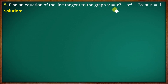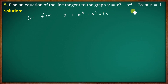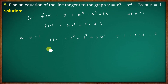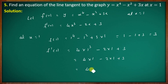Find the equation of the tangent line to y = x⁴ − x² + 3x at x = 1. Let f(x) = x⁴ − x² + 3x. Then f'(x) = 4x³ − 2x + 3. At x = 1: f(1) = 1 − 1 + 3 = 3, and f'(1) = 4 − 2 + 3 = 5.